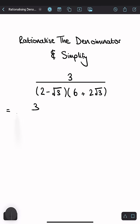So we have 3 over 2 times 6 is 12, 2 times 2√3 is plus 4√3, minus √3 times 6 is minus 6√3, and minus √3 times 2√3 is minus 2, and √3 times √3 is √9.